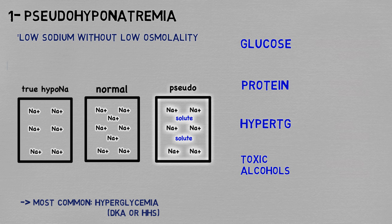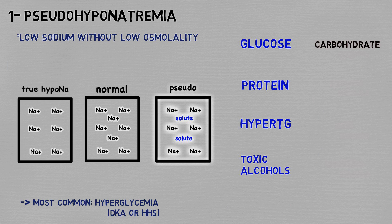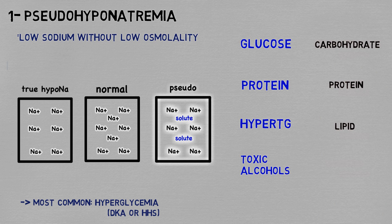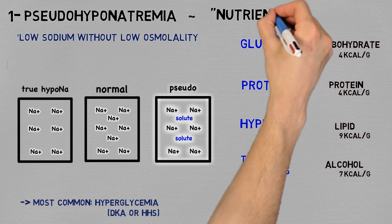Conveniently, there are four categories: one with carbohydrates, one with proteins, one with lipids, and one with alcohols. And as everyone who's ever been on a diet knows, these are the nutrients that have calories in them — so the way I remember this list is with the word nutrients.